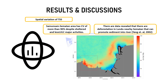Some of the hotspots include the Sematan area, which has a coefficient of variation of more than 90% despite being a sheltered area with dense land cover and major activities. Other studies also revealed that there are erosion events at Lundu nearby Sematan that can promote sediment input.